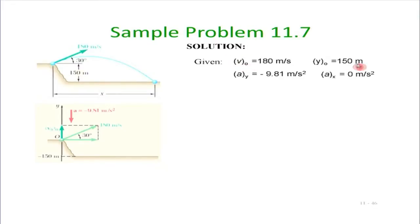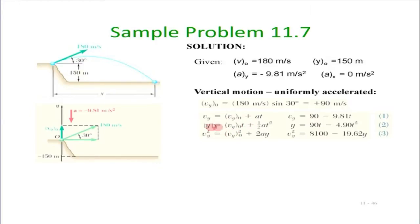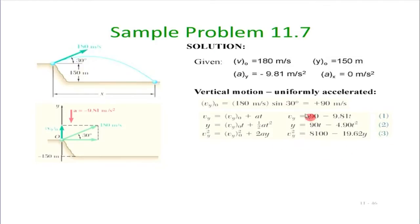Initial speeds: v_x0 = 180·cos(30), v_y0 = 180·sin(30). Initial coordinates: x₀ = 0, y₀ = 150. Acceleration in y: minus 9.81 m/s², acceleration in x: 0. The equations of motion: v_y = v_y0 + a·t, y = v_y0·t + half·a·t², and v_y² = v_y0² + 2·a·y. These give v_y as a function of time, y as a function of time, and v_y as a function of y.